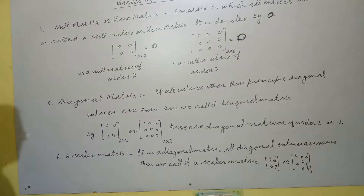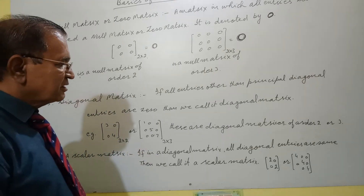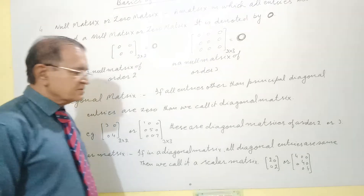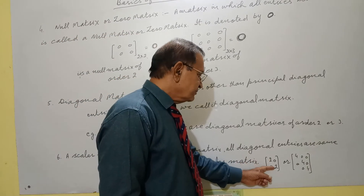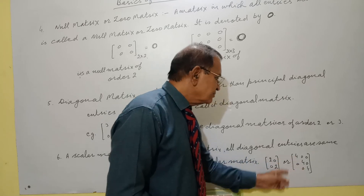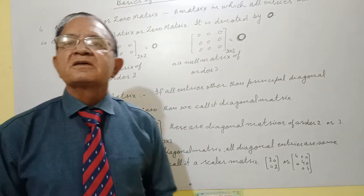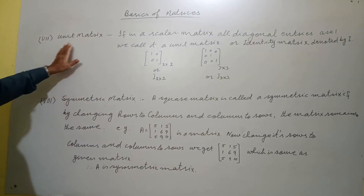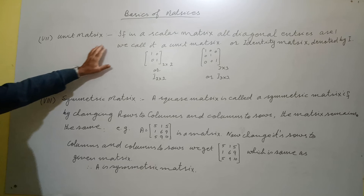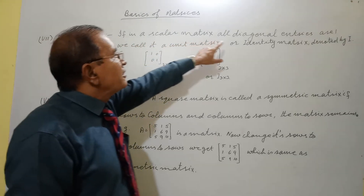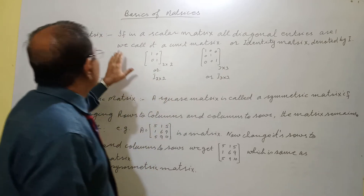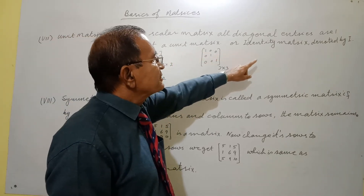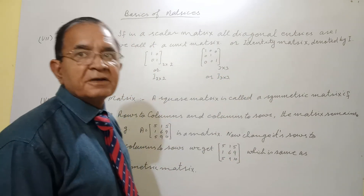Then a scalar matrix: if in a diagonal matrix all diagonal entries are the same, we call it a scalar matrix. Next, if in a scalar matrix all diagonal entries are one, we call it a unit matrix or identity matrix. It is denoted by capital I.